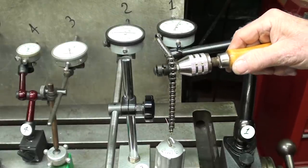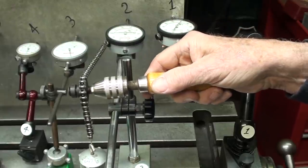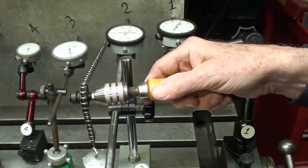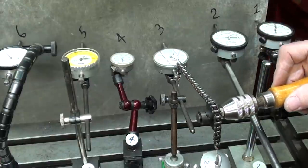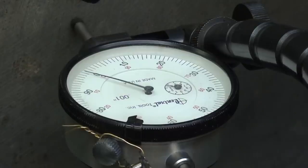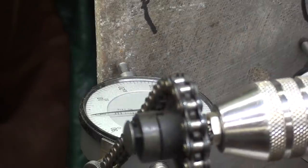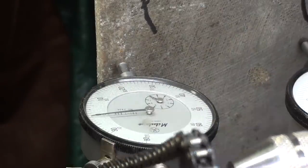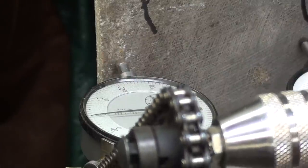200 grams on the number one Noga, no movement. Number two, about a half-thousandth. I had to totally re-rig number three, but it's four-thousandths. Number six, the Flexbar: one-thousandth. And number seven: one-thousandth.